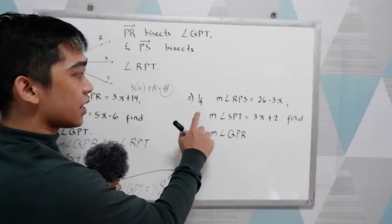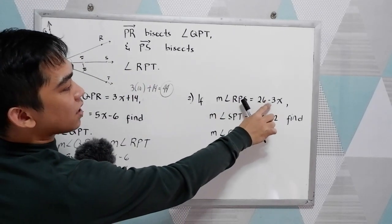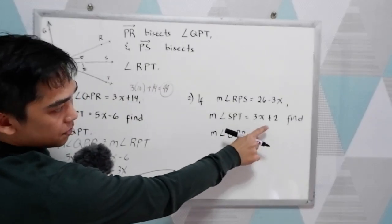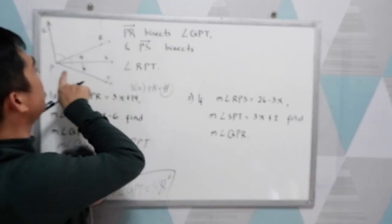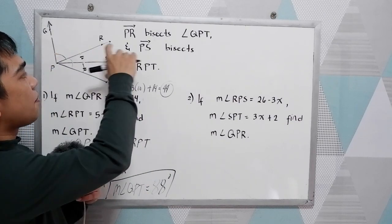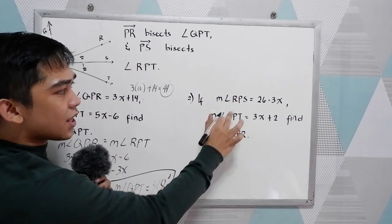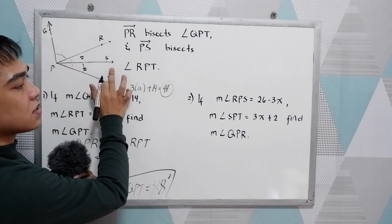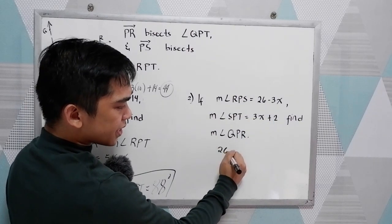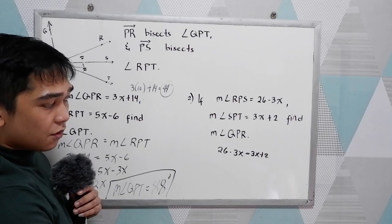Second problem. If measure angle RPS equals 26 minus 3X, and angle SPT equals 3X plus 2, find measure angle QPR. First, let us find the measure of the two angles, so let us find X first. We know that angle RPS equals angle SPT, so they are equal. Since they are equal, 26 minus 3X equals 3X plus 2.